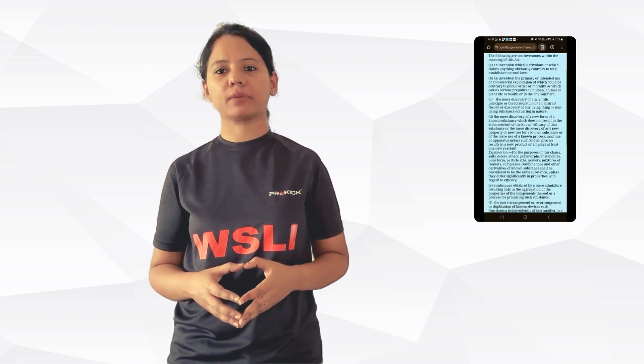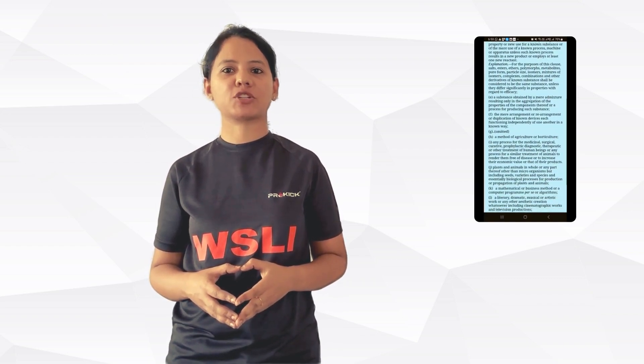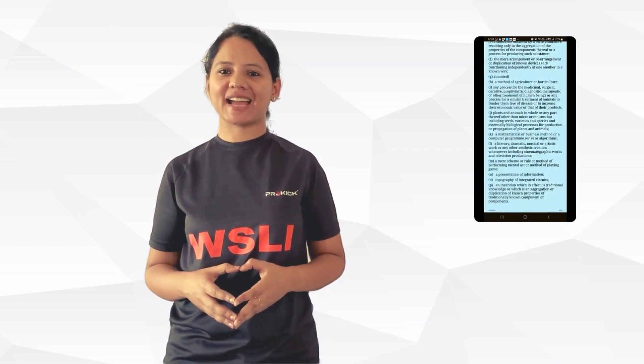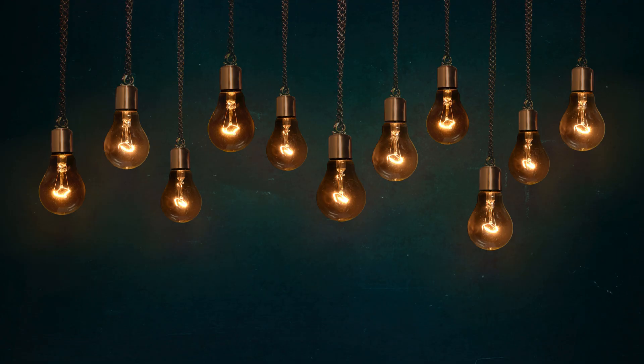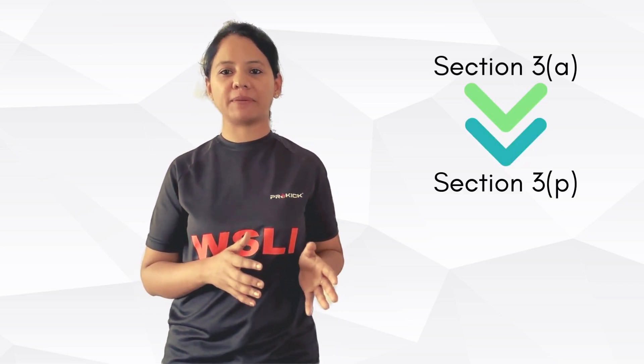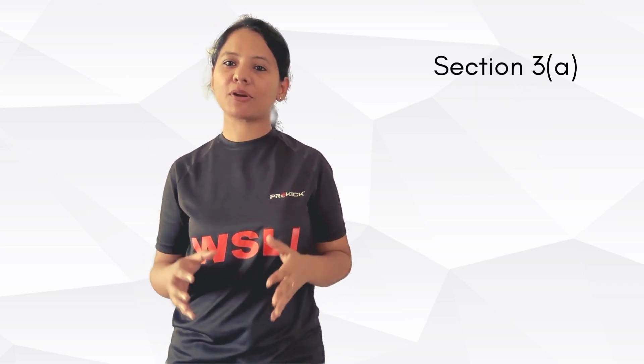In this video, we will have a look at the list of non-patentable inventions disclosed in Section 3 of the Indian Patents Act, 1970. As discussed in the previous video, the Indian Patents Act is silent on the exact categories of inventions that can be patented; however, a list of statutory exceptions is disclosed from Section 3A through Section 3P. So let's have a deeper look at these non-patentable inventions with examples and lawsuits.